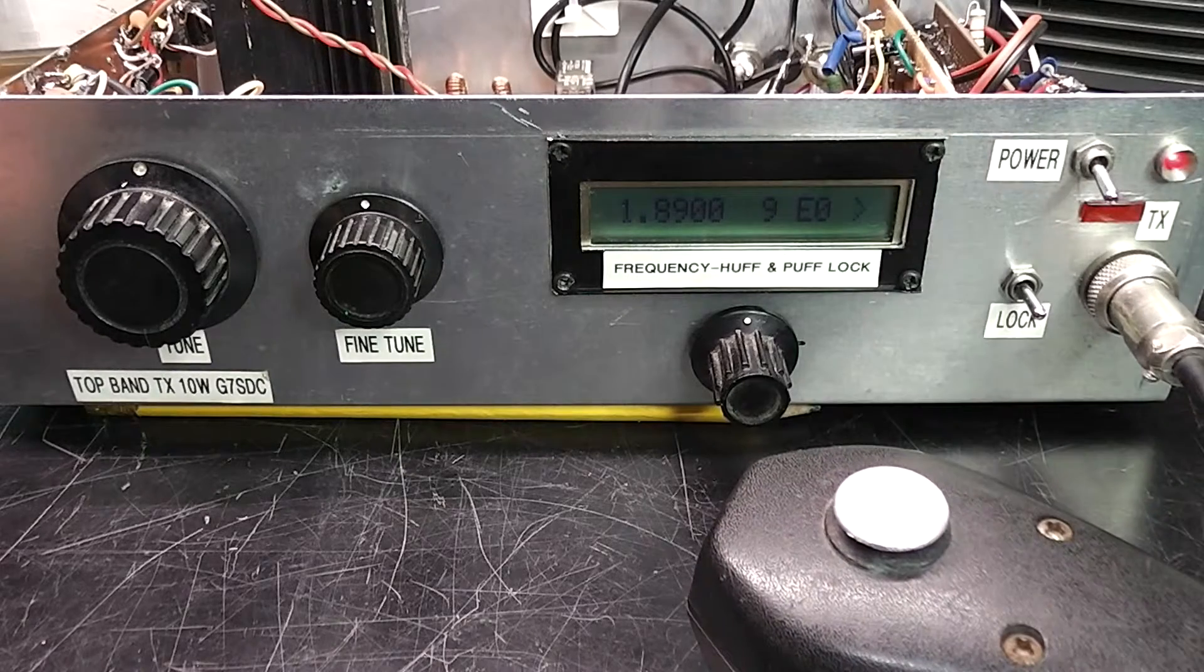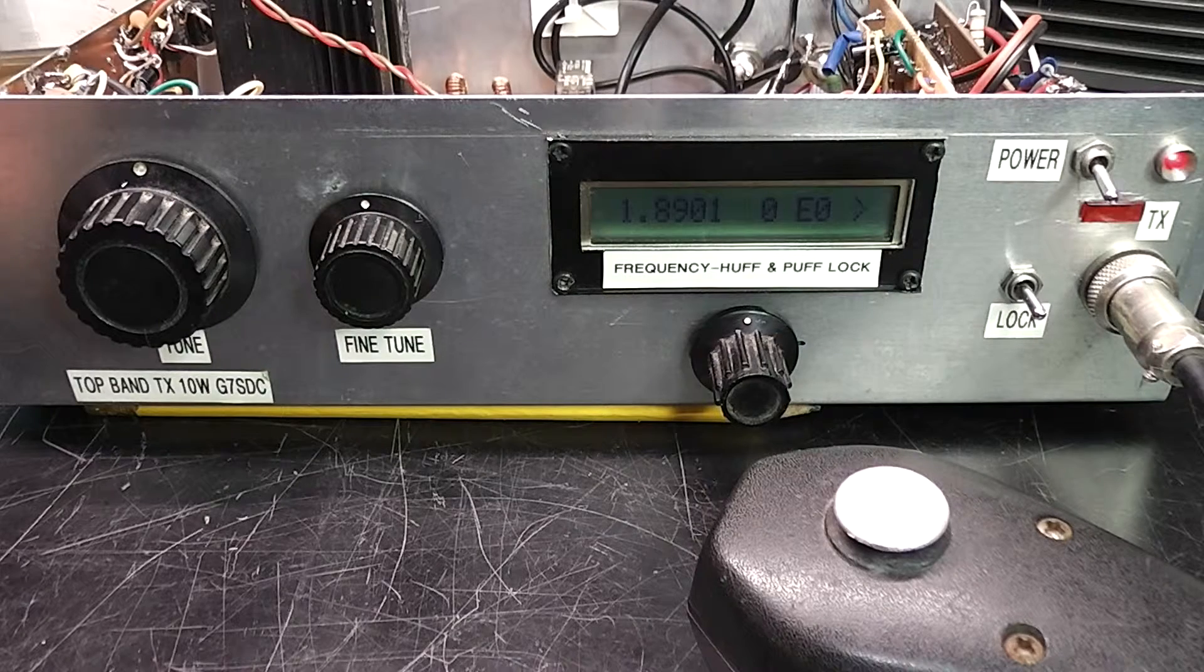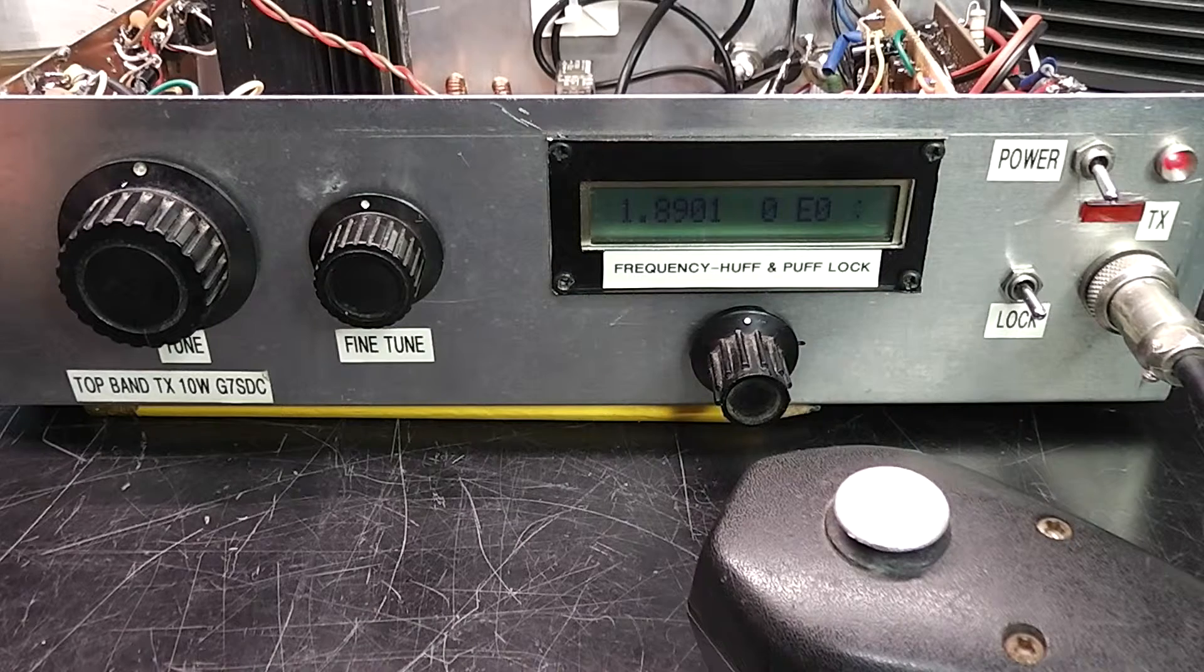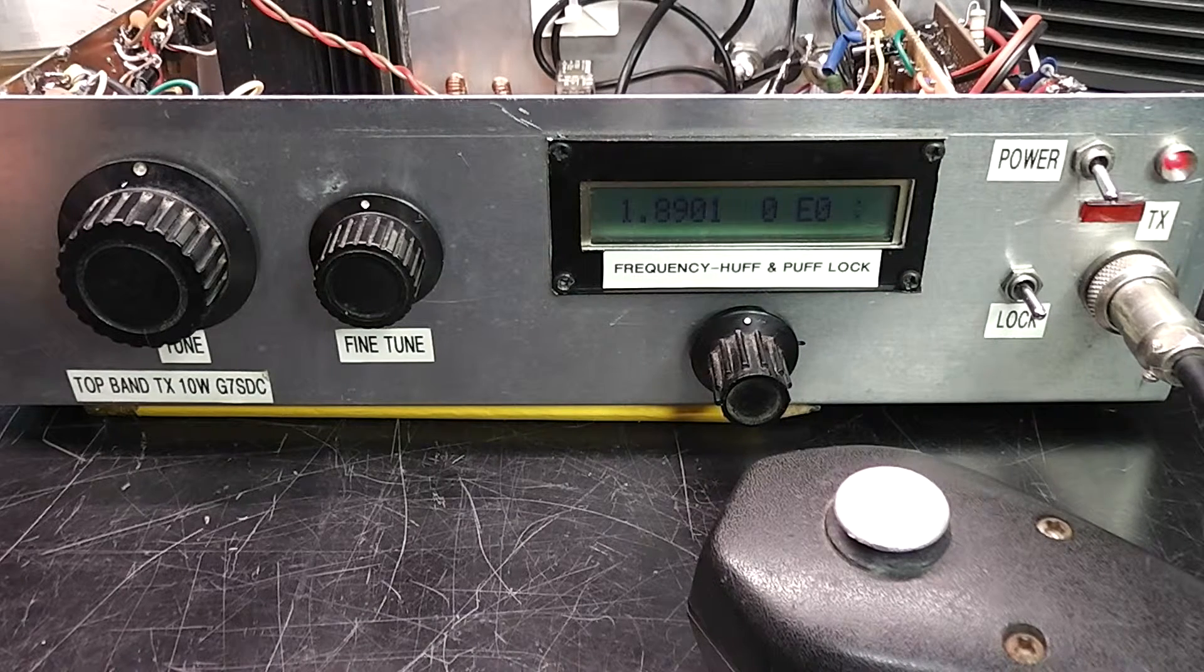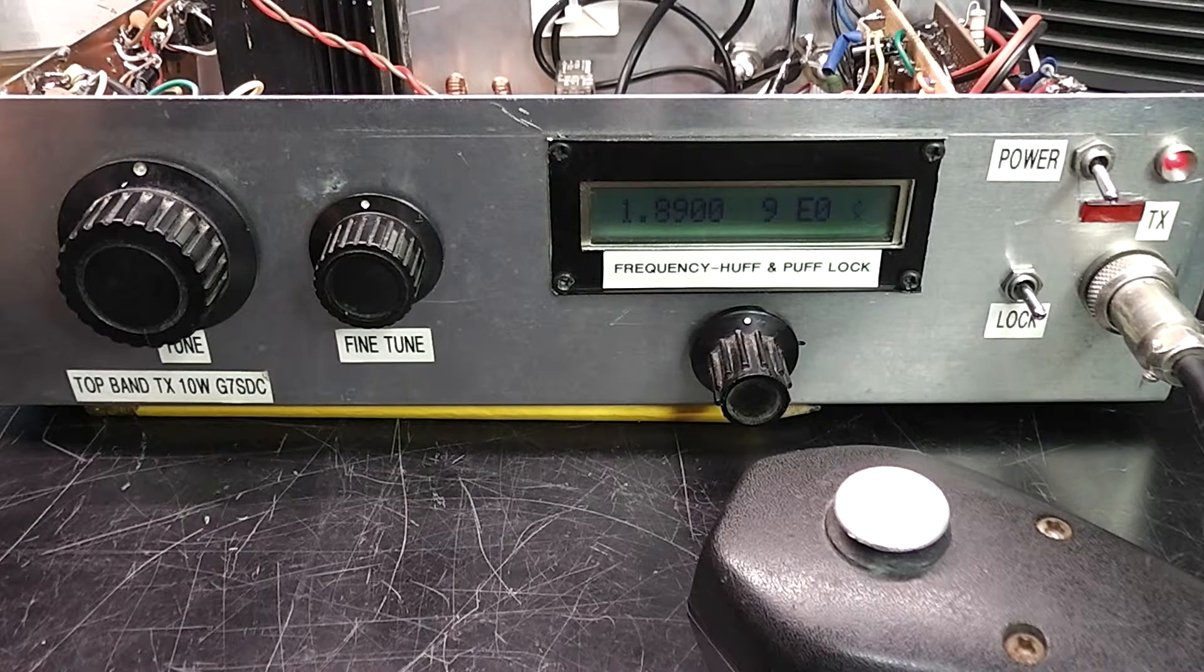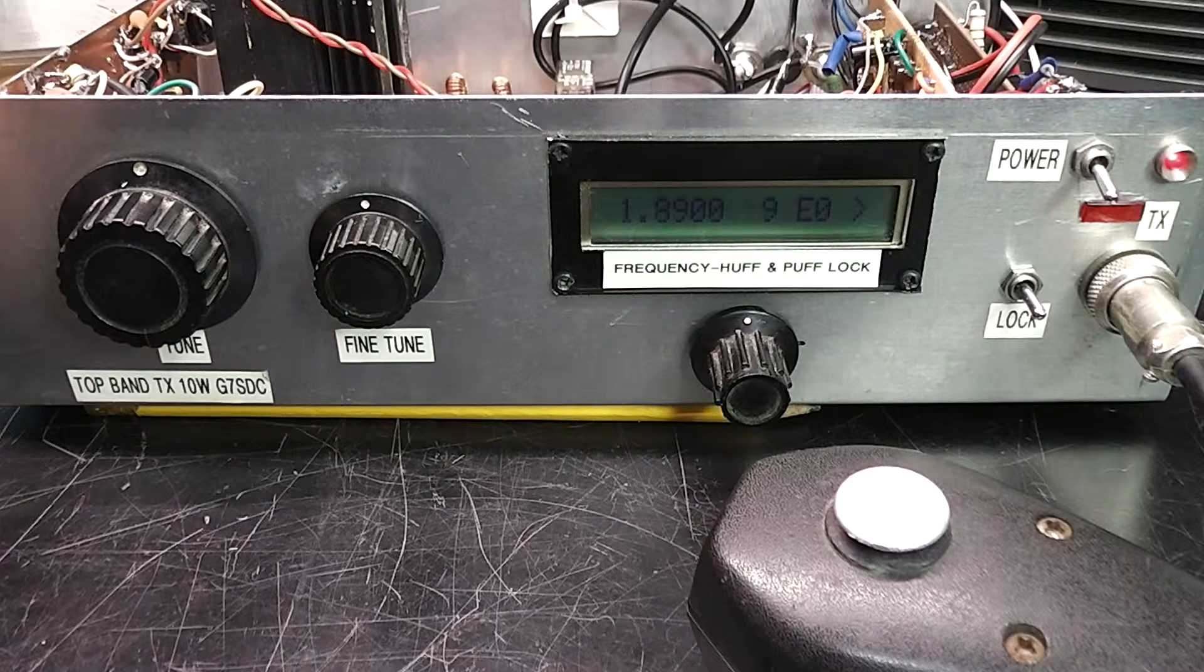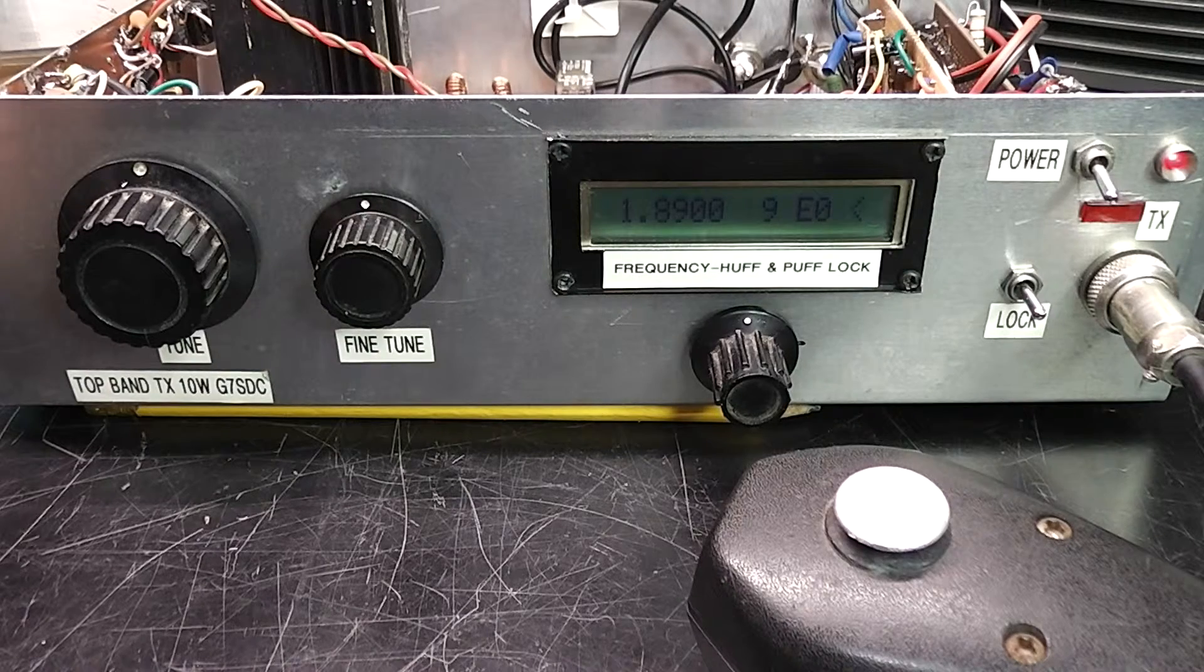When it transmits, it switches the aerial from the receiver to the transmitter. It also provides an output to the receiver that mutes it, because most receivers had a mute input around the 1970s and 80s so that you could plug your own transmitter in the back and mute it when you go into transmit mode.